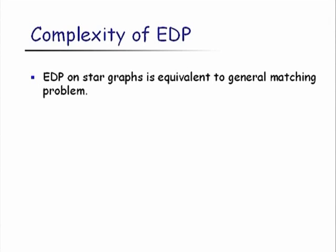There is a long and rich history of results on this problem. Even the EDP problem on star graphs — trees of height 1, where you have a single vertex connected to other vertices by direct edges — is equivalent to the general matching problem. We know how to solve matching in polynomial time, but that's non-trivial. So EDP captures this very naturally.